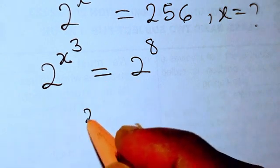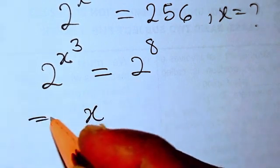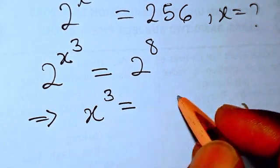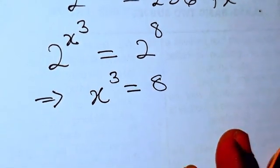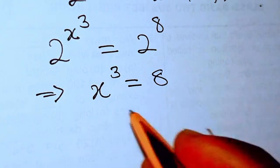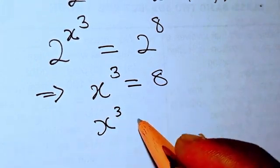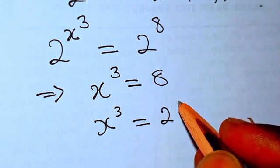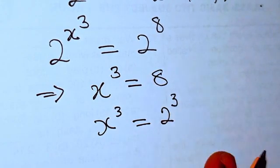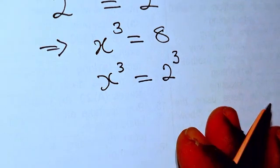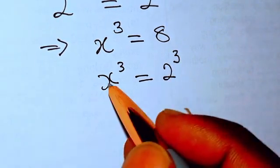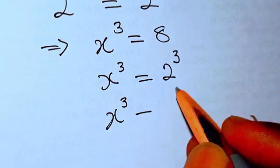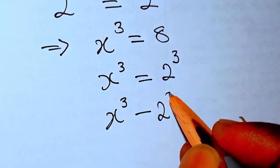For the fact that the two bases are the same, this implies that x to the power of 3 equals 8. So now x to the power of 3 equals 2 to the power of 3, which means we can write this as x³ minus 2³ equals 0 by transposing 2 to the power of 3 to the other side.